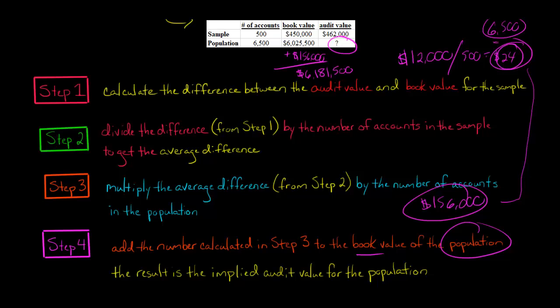This is the implied audit value for the population. This is going to replace our question mark here. That is the implied audit value for the population: $6,181,500.